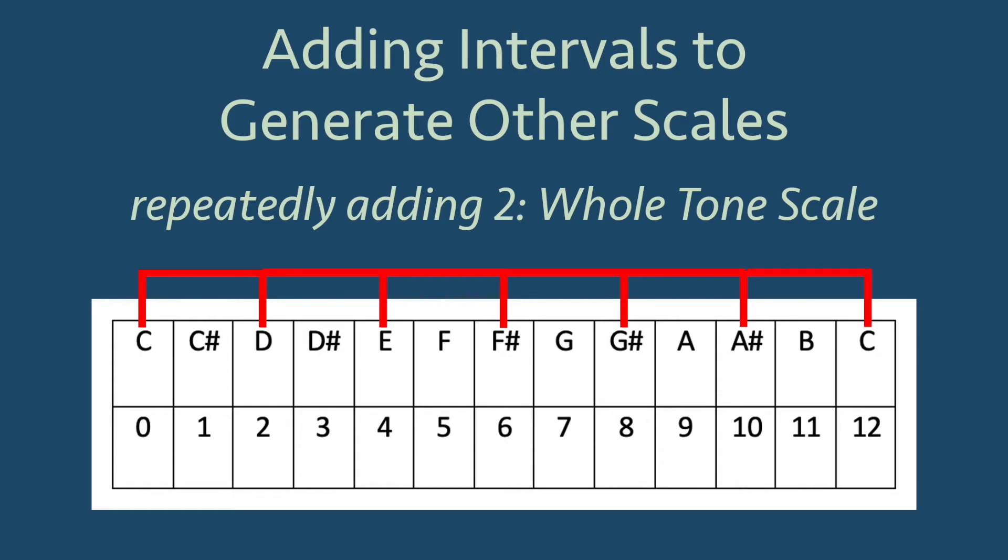If we repeatedly add a whole step, which means starting at C and adding the number 2, we generate the scale C, D, E, F sharp, G sharp, A sharp.